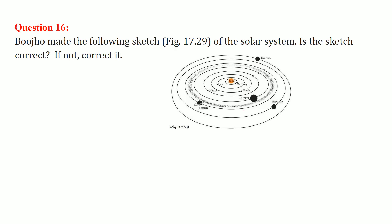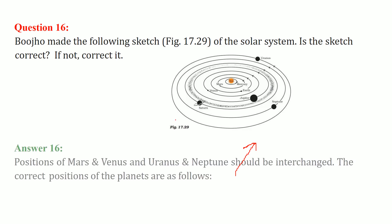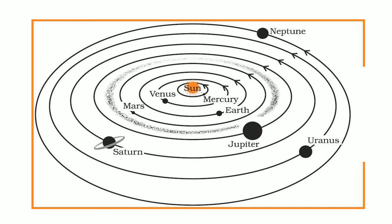Bhojo made the following sketch of the solar system. Is the sketch correct? He has to do certain minor changes. In this case, Mars and Venus have to be replaced - they have to change their position. And Uranus and Neptune - they have to be exchanged.